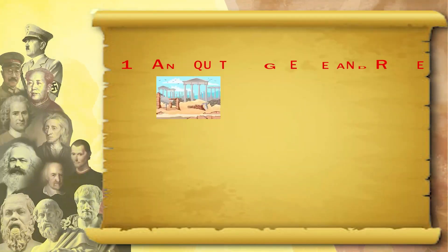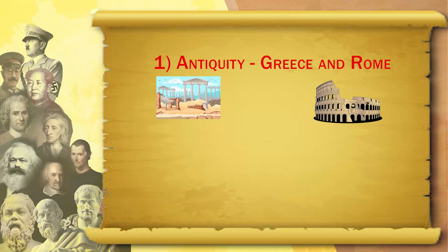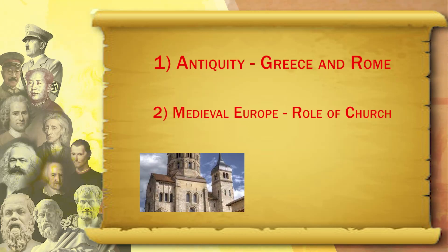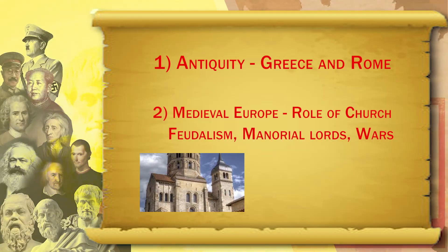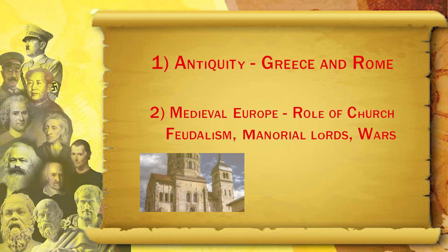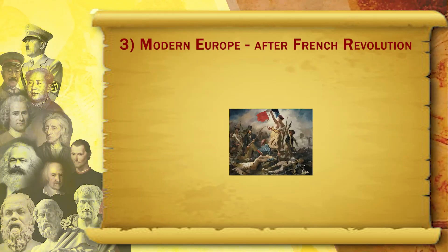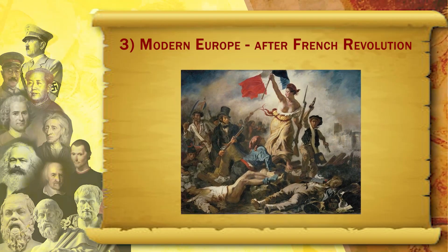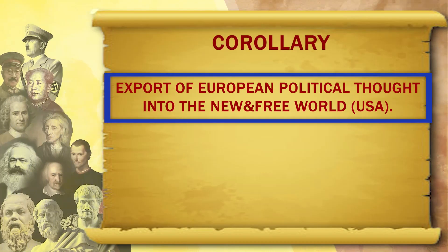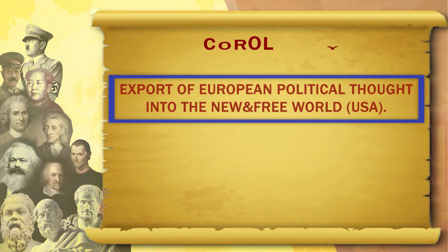One is that of antiquity — Greece and Rome. Then medieval Europe, in which we have the big and important role of church, feudalism, various manorial lords, various wars and fights, and the contestation between church and the state. Then after the French Revolution, we can say there is the beginning of modern Europe and modern European political thought.